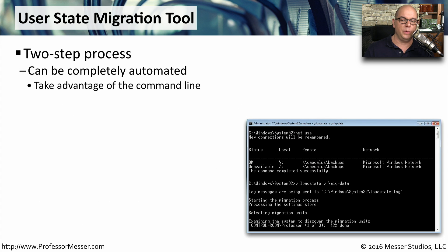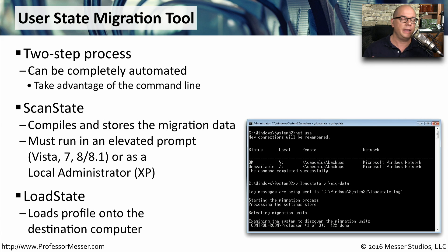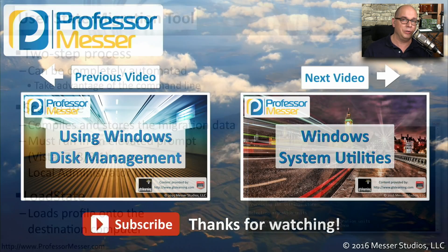The process with USMT is a two-step process, all performed at the command line. The first step is to perform a scan state, which compiles all of your information and stores all of the migration data. In Windows Vista, Windows 7, and the Windows 8 editions, you have to run this in an elevated prompt; in Windows XP, you can run this as a local administrator. The second step is the load state, where you take all of that information and load it onto the destination computer. Whether you're using the User State Migration Tool or Windows Easy Transfer, this is a very good way to get all of your information from one computer onto your brand new system.